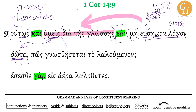So if you do not offer a clear sign — a clear word through the language, through the tongue — how will what is being spoken be known? Here we have come to the main clause, which begins with pos — an interrogative adverb describing manner. 'How will what is being spoken' — so to laloumenon is from laleo; it is a substantive participle: neuter nominative singular present middle-passive participle — 'that which is being spoken.'